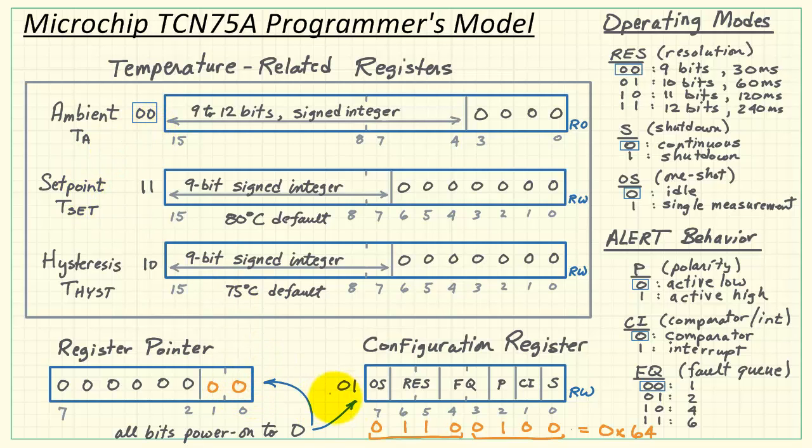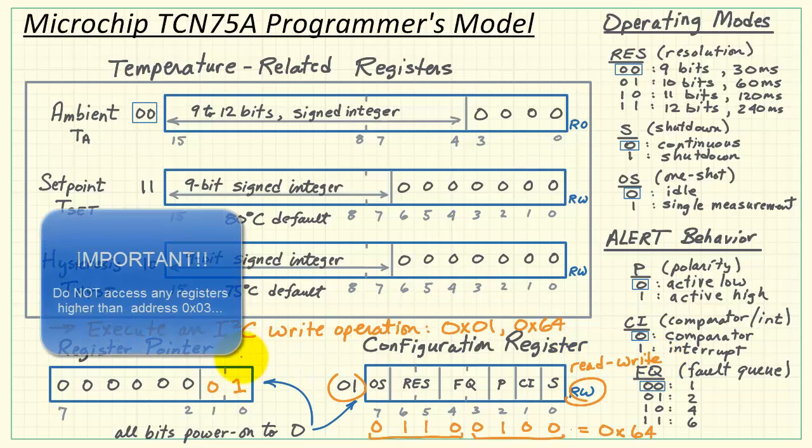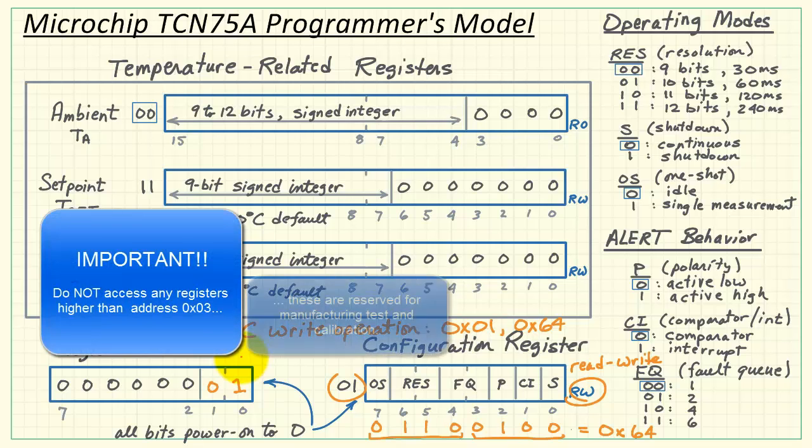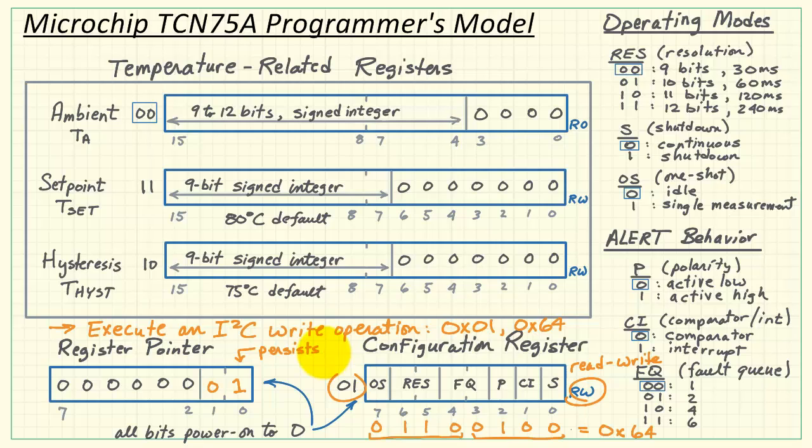When the device first powers up, the register pointer is pointing at the ambient temperature register. However, we need to configure the device. That means we need to get the register pointer set to 01. Therefore, execute an I2C write operation at address 0x01. So you'd write out the byte value 01, and then write out the configuration register. That would be hexadecimal 64. Note that the configuration register is read-write. Important point. Do not access any registers higher than address 03 hex. These are reserved for manufacturing test and calibration. It's important to make sure you do not go higher than that value. The register pointer value persists until you write a different value. It does not auto-index, as is typical of many I2C devices.